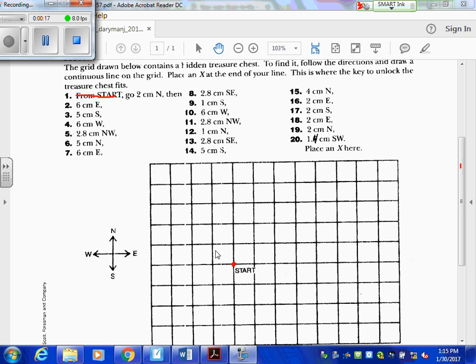Go two centimeters north. Each block is a centimeter, as it says. We want to go two to the north, so we basically just go up. On this paper, up is north.